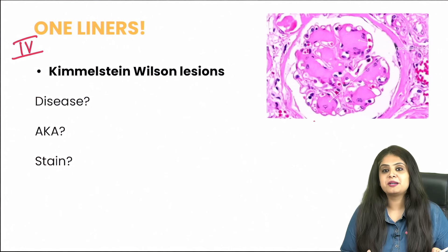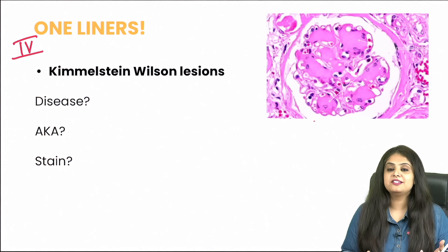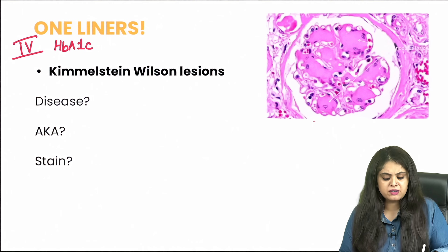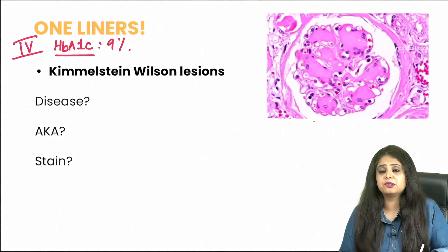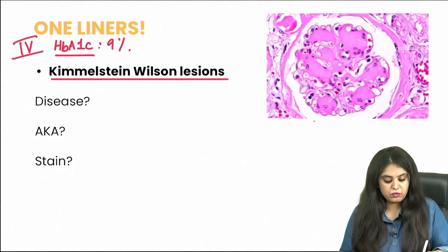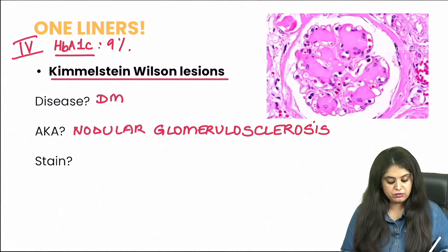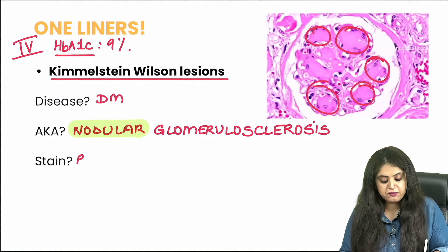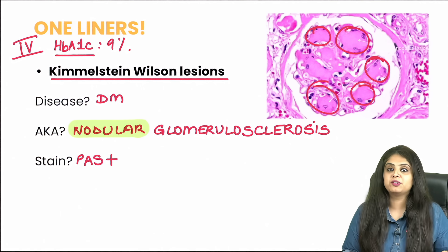Question four, also recently asked in INI CET: a diabetes case with an uncontrolled HbA1C of 9–10%. This is diabetic nephropathy and the characteristic lesion is the Kimmelstiel-Wilson lesion, also called nodular glomerulosclerosis. You can see pink-colored nodules in the image, and the special stain used is PAS positivity to confirm it.